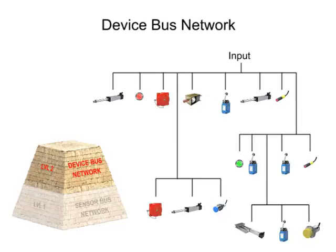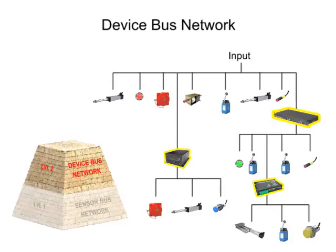The next increasingly complex level of industrial fieldbus networking is the devicebus network. The devicebus network is similar in function to the sensorbus network, but works on a larger scale, connecting many sensors and actuators together. The devicebus network also connects equipment to variable speed drives and motor control centers that allow for control of individual elements in the network.